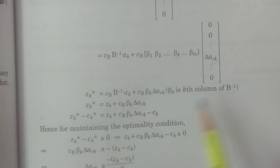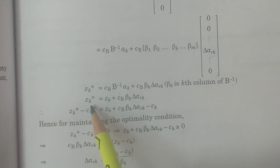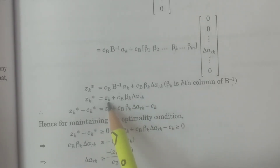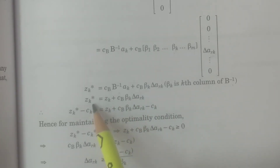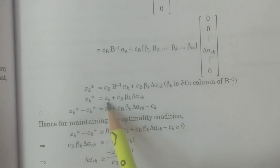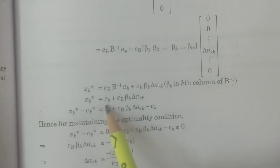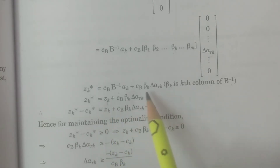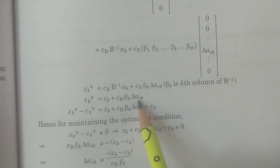Beta-k is the kth column of B-inverse. Therefore zk-star equals cb times B-inverse times ak plus cb times beta-k times delta-ark. Since cb times B-inverse times ak equals zk, we have zk-star equals zk plus cb times beta-k times delta-ark.